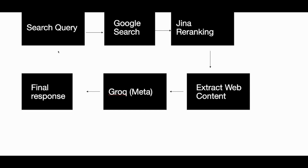Let's assume you have a search query where the answer depends on live internet data — something that a language model by itself doesn't know, like news or stock market information. That's the kind of query that needs access to internet data. We're going to send it to Google search, and since we're talking about an open-source solution, you can leverage any API that gives you results back.